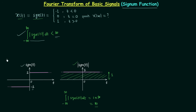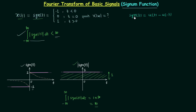Since the signum function is not absolutely integrable, we need to make it so. The problem is that its waveform is non-converging — the signal is constant from 0 to infinity and again constant from minus infinity to 0. If we can make the waveform converge, the signal becomes absolutely integrable. We know the signum function can be written as u(t) minus u(−t), and we will use this property to find its Fourier transform.